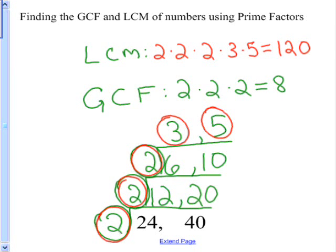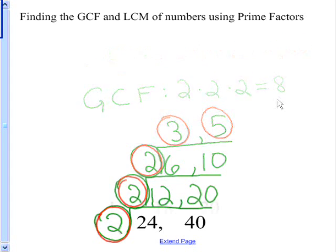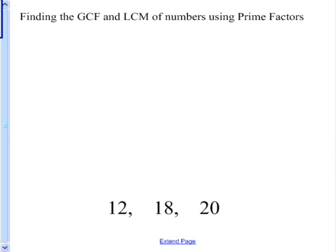So the GCF of 24 and 40 is 8, and the LCM is 120. Okay, our last example, we want to find the GCF and LCM of 12, 18, and 20.